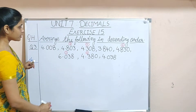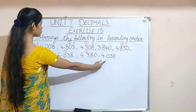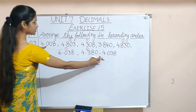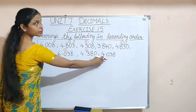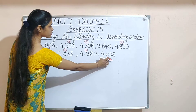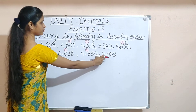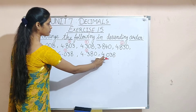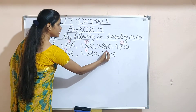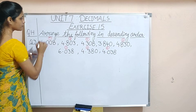Now what are we left with? We have 4.008 and 4.038. The first decimal place is equal — both are 0. Then we compare the next place: one is 3 and the other is 0. Since 3 is bigger than 0, 4.038 is bigger than 4.008. So 4.038 will be the sixth number and 4.008 will be the seventh number.